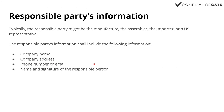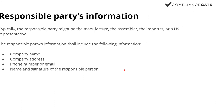Responsible party refers to the issuing company. It could be a manufacturer or it could be an importer, but it should be a US company. So you need company name, address, contact details, and signature — very similar to the DOC requirements in the EU.